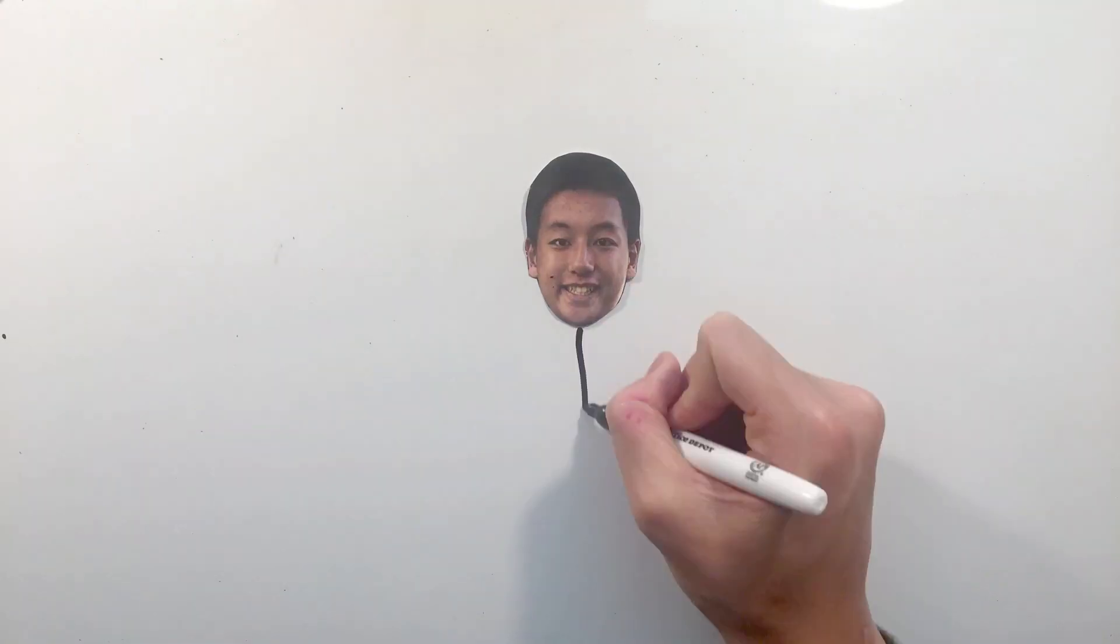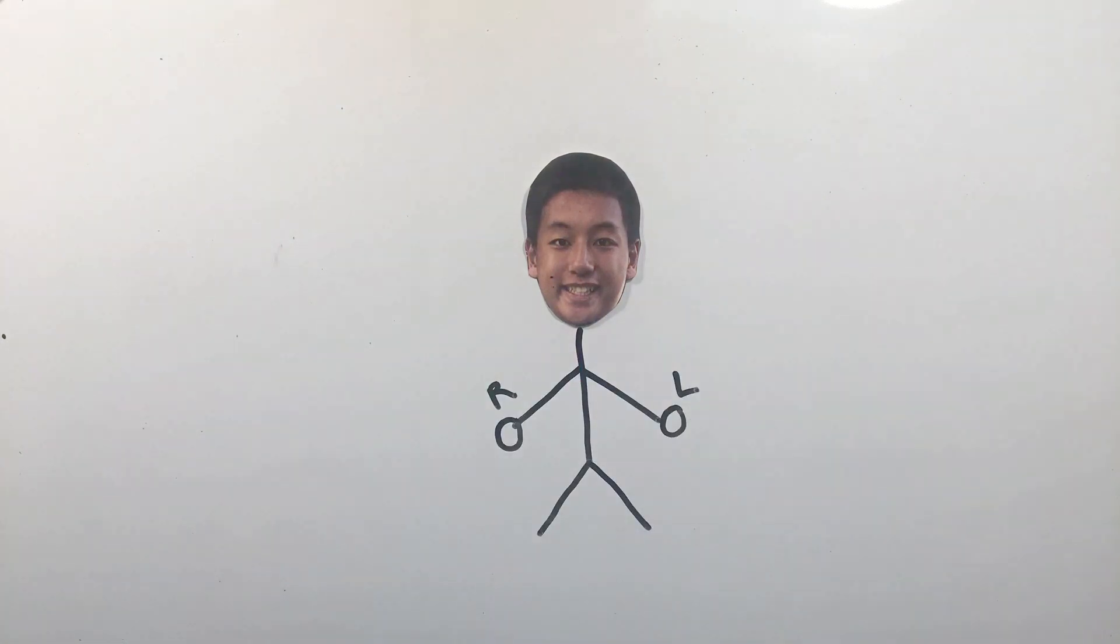When using the right-hand rule in any future electricity or magnetism problem, it's vital that you use your right hand, as the left hand will produce the opposite and incorrect answer. And if you can't tell your left hand from your right hand apart, then honestly, I don't know how to help you.